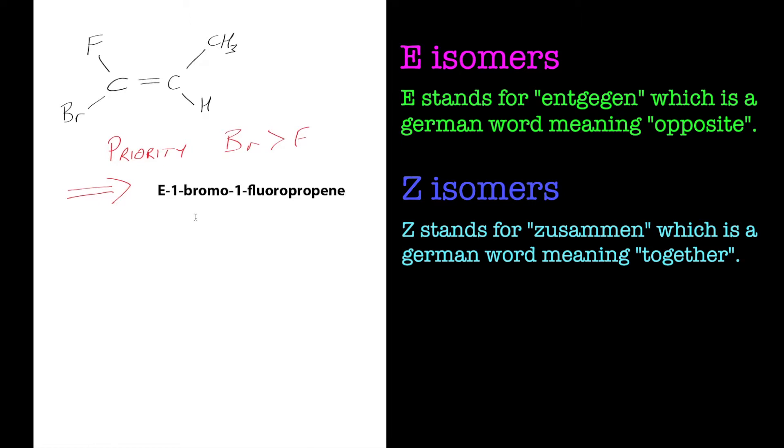And if you just draw a line across like this, you should be able to see that the higher priority group is on the opposite side. So it's entgegen-E.